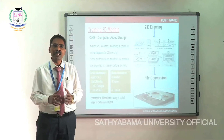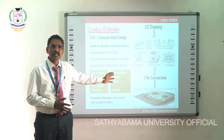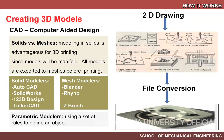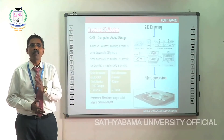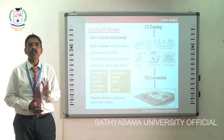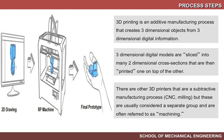Once the files are converted, they are transferred to the RP machine to obtain the product. Available software includes AutoCAD, SolidWorks, and Tinkercad — all versatile tools that convert 2D diagrams into 3D models, which are then converted into the required file format. Additional mesh models and parametric modelers are also available. These are the process steps from 2D drawings through the RP machine to the final prototype.